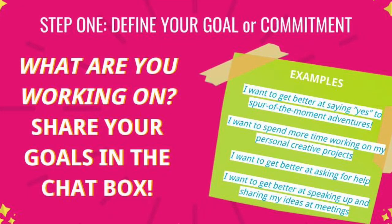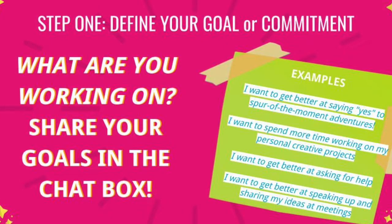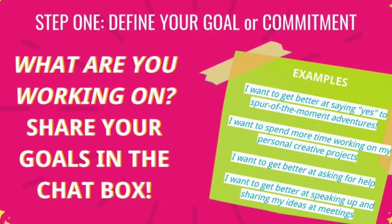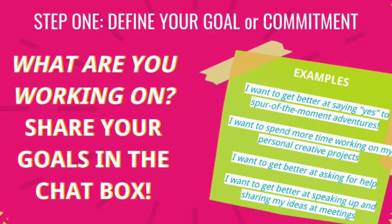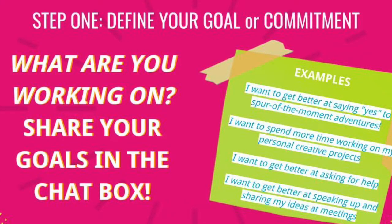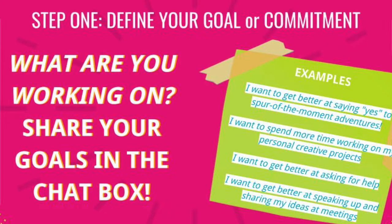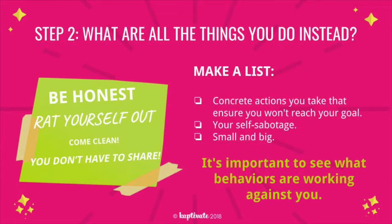Step number two is to make a list of all the things you do instead of working on that commitment or improvement goal. What is that self-sabotage — all those small and big things. Be honest with yourself, rat yourself out, come clean. For example, the things that I do instead of saying yes to go on adventures: I stay home and Netflix and chill, I clean the house, I'll say I'll do it later and make plans and then never do, or I'll do something different — say I have other plans, play with the puppy, do other work — all these things instead of saying yes.